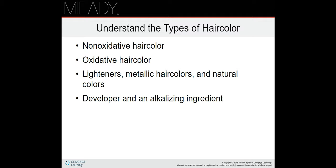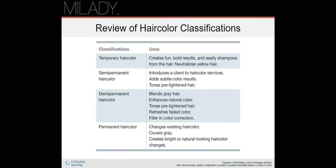On page 679, temporary hair color — it's just what it sounds like. It washes out really fast, creates fun bold results, and easily shampoos from the hair. It can also neutralize yellow hair, so if you use a violet temporary hair color it can neutralize the yellow out of the hair and make it look more platinum or white.